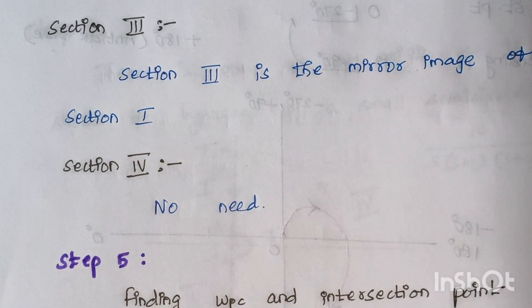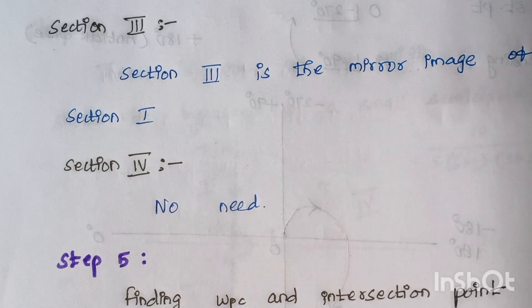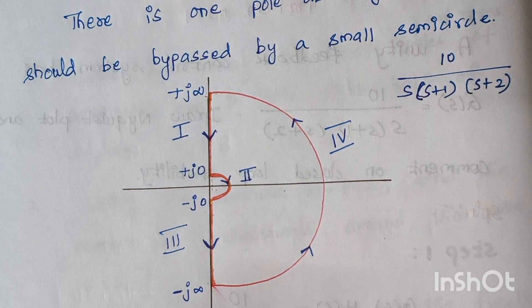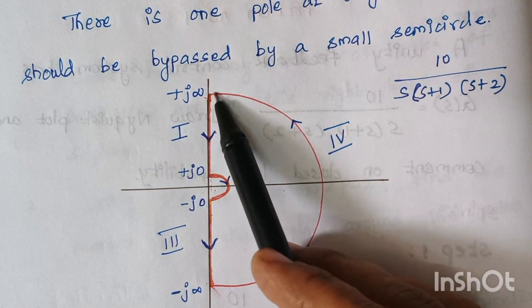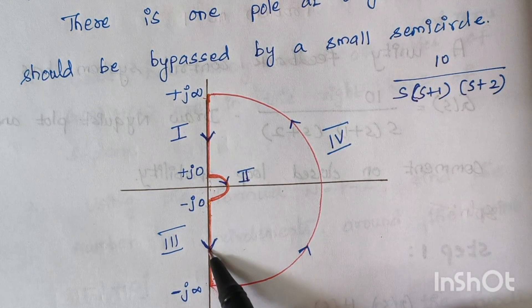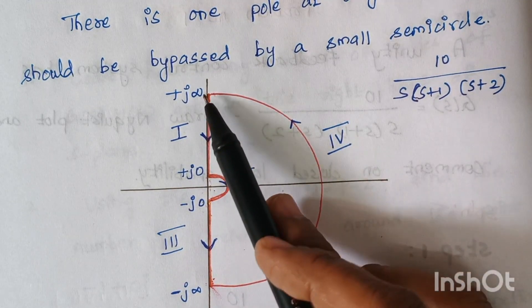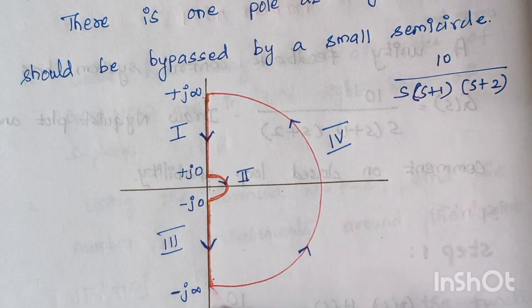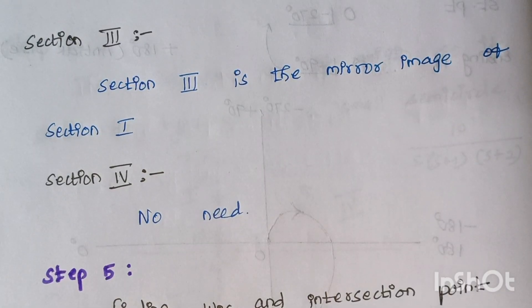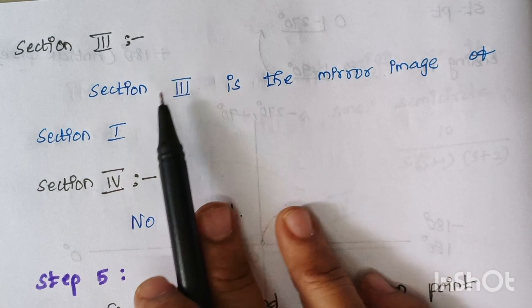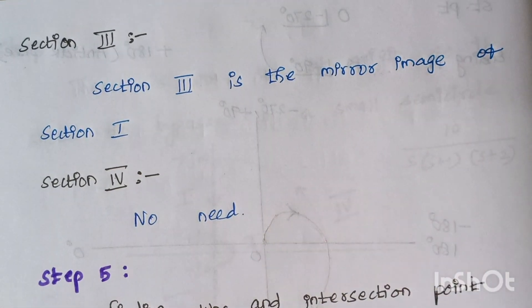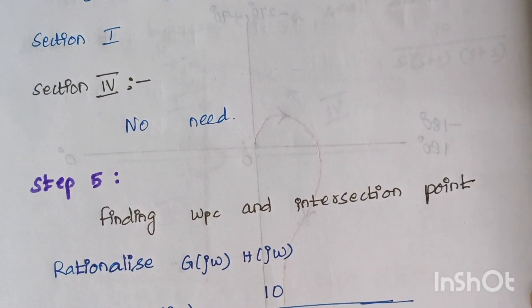Section 3 is the mirror image of section 1 — it exactly replicates section 1. So we do not solve section 3 separately, and for section 4 no analysis is needed. We move to step 5.